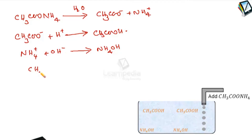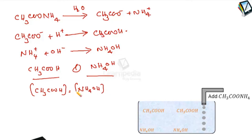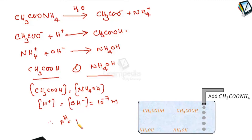Thus a weak acid, acetic acid, and a weak base, ammonium hydroxide, are formed. The nature of the solution depends upon the relative strength of acetic acid and ammonium hydroxide. We know that the KA and KB values of acetic acid and ammonium hydroxide are almost equal, so the relative strengths of acid and base are equal. Therefore the concentration of H⁺ from the weak acid equals the concentration of OH⁻ from the weak base, both equal to 10⁻⁷ molar, and the solution has pH equals pOH equals 7. Hence the solution is neutral.